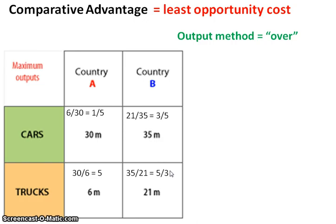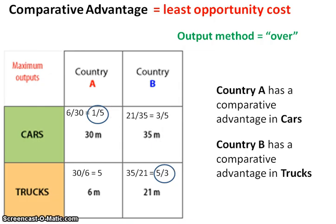You have a comparative advantage if you have the least opportunity cost. Comparing cars: country A has 1/5 and country B has 3/5, so country A has the comparative advantage in cars because 1/5 is less than 3/5. For trucks: country B has 5/3 and country A has 5, so country B has the comparative advantage because 5/3 is less than 5. Since each country has a comparative advantage in a different good, they should trade.